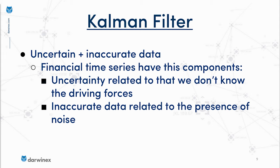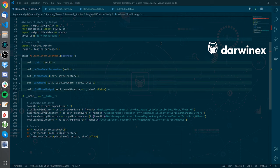I will talk about uncertain outcomes and a biasing approach in a bit, which will also be really interesting. Let's first get to the code implementation to continue the analysis. In this case, I want to focus a lot on the theory behind the Kalman filter because I want to make these lectures as practical as possible. However, I will leave some resources I personally found useful in the past to understand how it works.